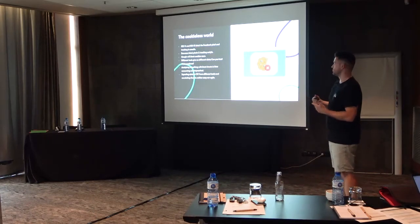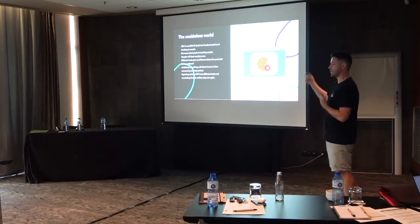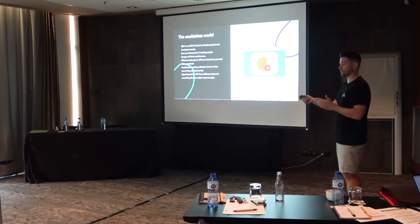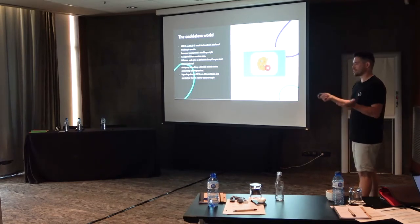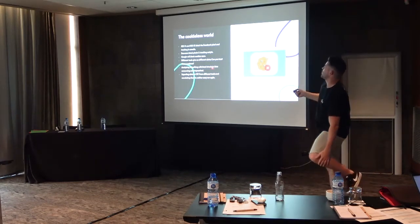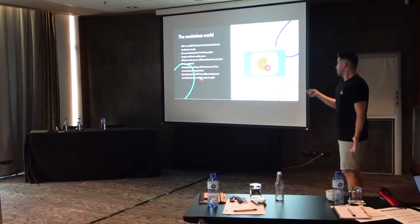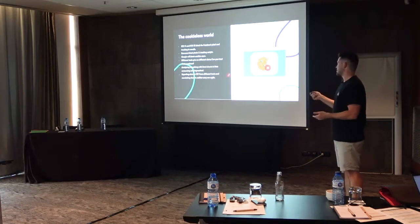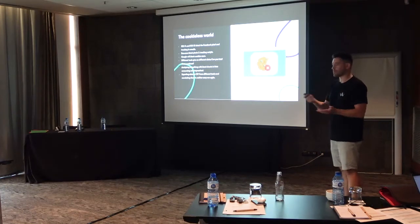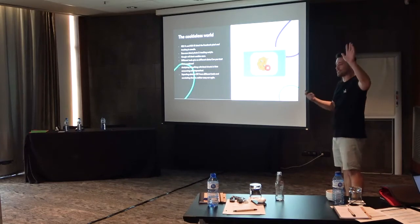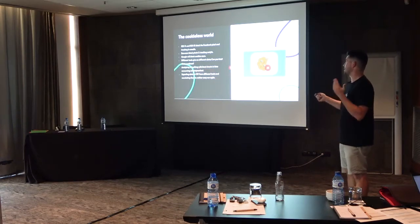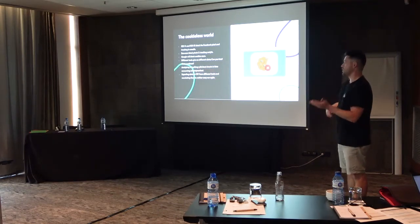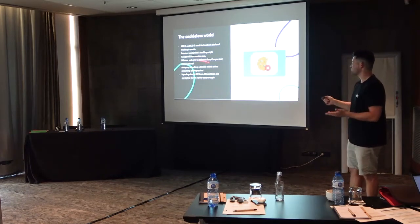Another big problem is that different tools give us different data. For example, in my case I was checking Facebook for how many leads I get from Facebook, and then went to ActiveCampaign — maybe on Facebook it shows 30 leads and in ActiveCampaign it's just 15. Who is right, who is wrong? You can't really trust those numbers. Also, analyzing everything with Excel or Google Sheets is time-consuming — many of you have spent a lot of time on this.